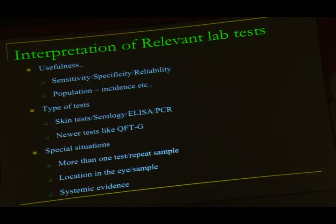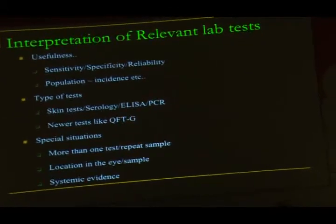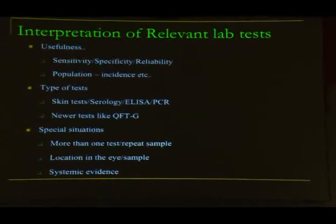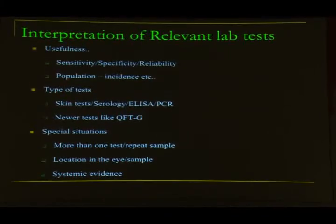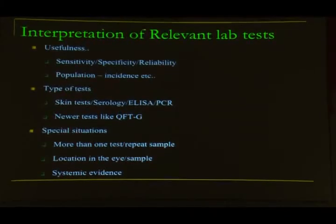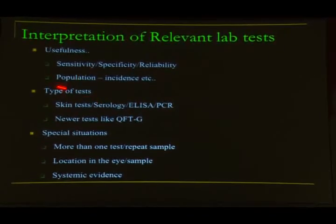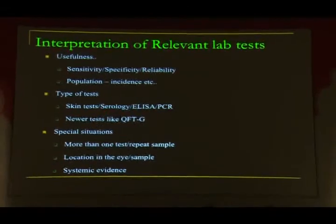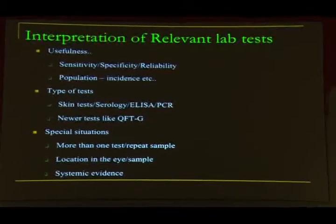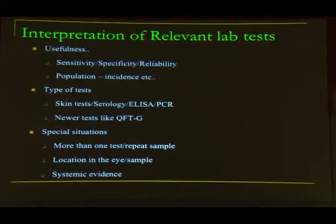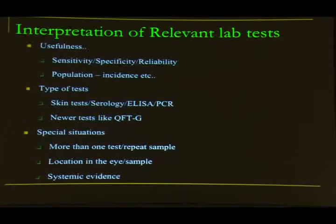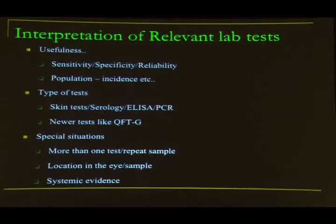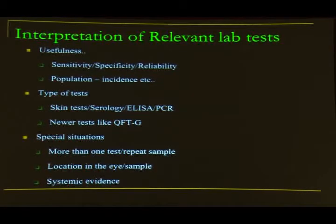Tests should be interpreted in context of usefulness, sensitivity, specificity, and reliability. There is no point doing CRP or TORSE test alone without more specific tests. Blood ELISA for TB is not useful in India. Mantoux positivity is significant, but borderline tests in endemic settings like India require other supportive evidence. Consider newer tests like QuantiFERON.